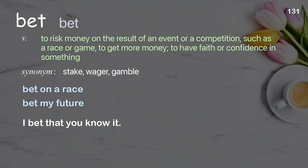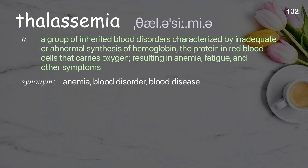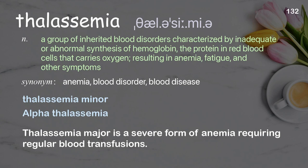Thalassemia: a group of inherited blood disorders characterized by inadequate or abnormal synthesis of hemoglobin — the protein in red blood cells that carries oxygen — resulting in anemia, fatigue, and other symptoms. Examples: thalassemia. Thalassemia major is a severe form of anemia requiring regular blood transfusions.